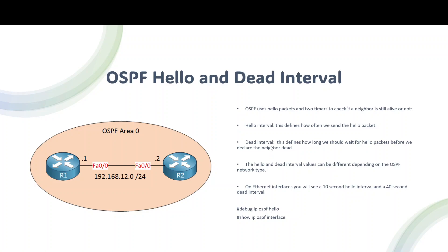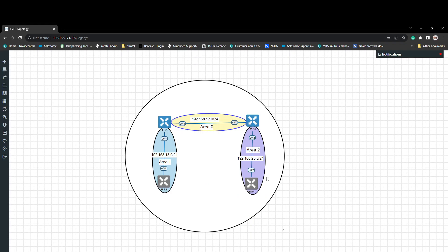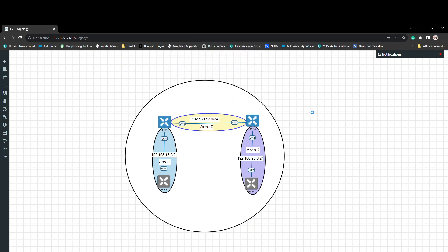Okay, now let's check the lab. I am looking at the topology with R1 and R2. The OSPF neighbors are established in this topology.